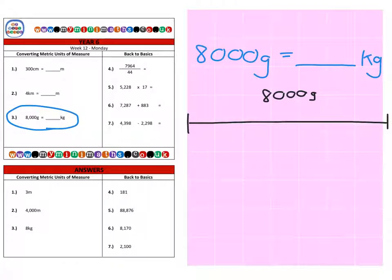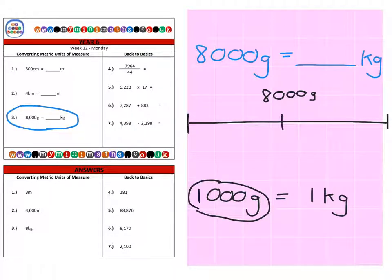We're going to go back to that number fact that you need to remember, which is 1,000 grams is equal to one kilogram. I know that if I've got a thousand, I need to break my 8,000 grams into 1,000 gram sections. Let's break it down into eight sections - one, two, three, four, five, six, seven, eight. Each of these sections is worth a thousand grams.